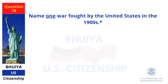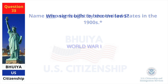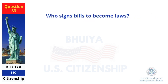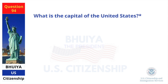Name one war fought by the United States in the 1900s. World War I. Who signs bills to become laws? The President. What is the capital of the United States? Washington, D.C.